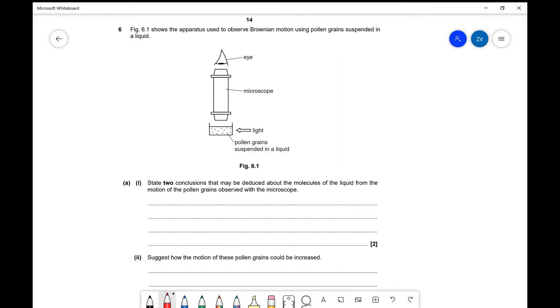What we're going to be looking at is another example of a Brownian motion question. So this is a past paper question from 2013 OCR Physics A.